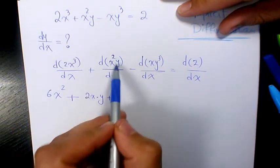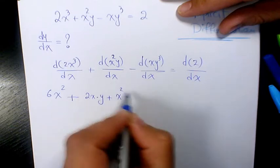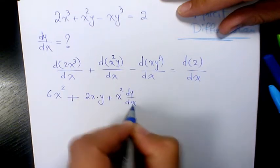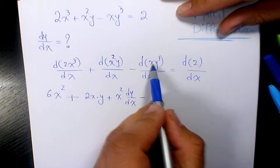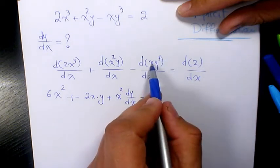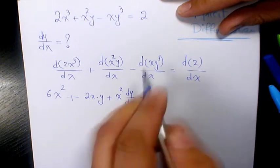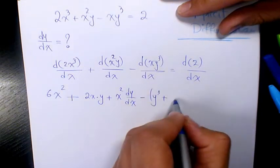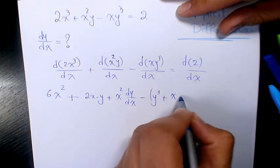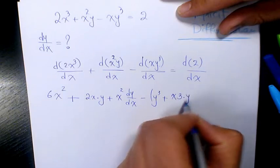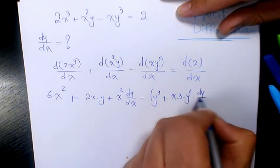Minus xy³, the derivative of x is 1 times y³, plus x times the derivative of y³ which is going to be 3y² times dy/dx.